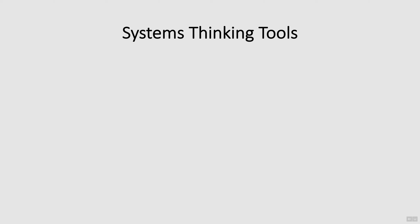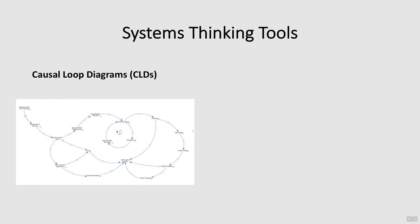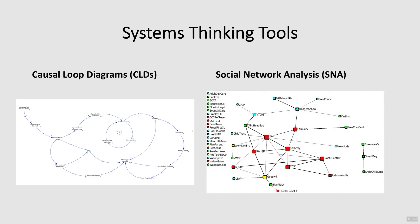Two commonly used systems thinking tools are causal loop diagrams and social network analysis. Both of these tools create visuals that help map the system and provide an opportunity for dialogue between different stakeholders affected by the complex problem.